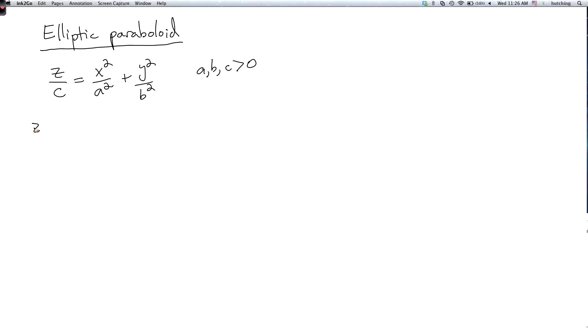So if we set z equals zero to find the intersection with the xy plane we just get one point, the origin.